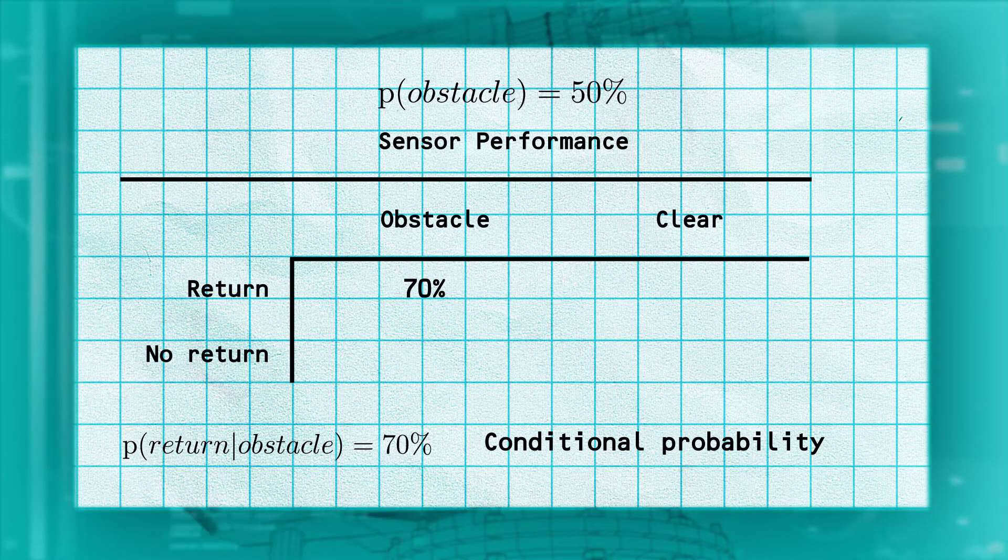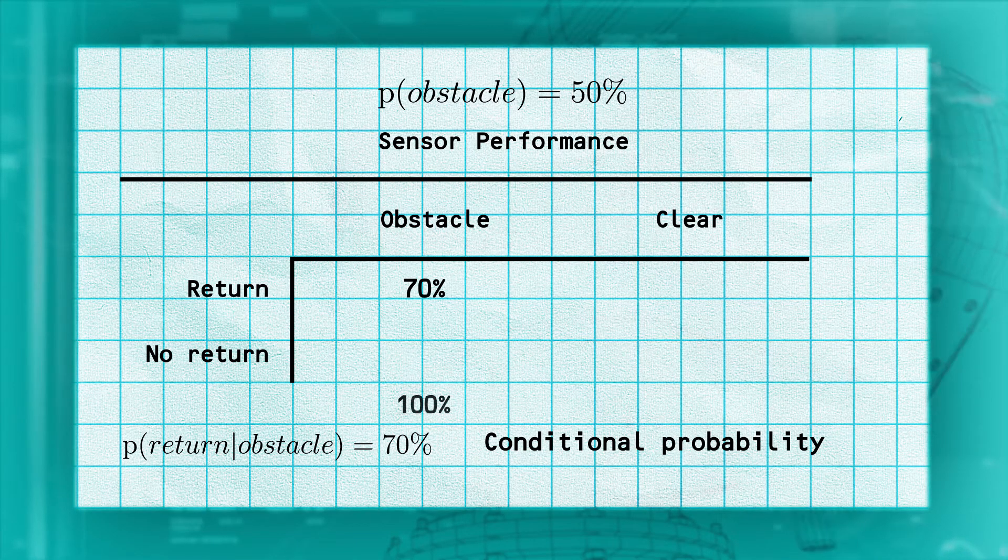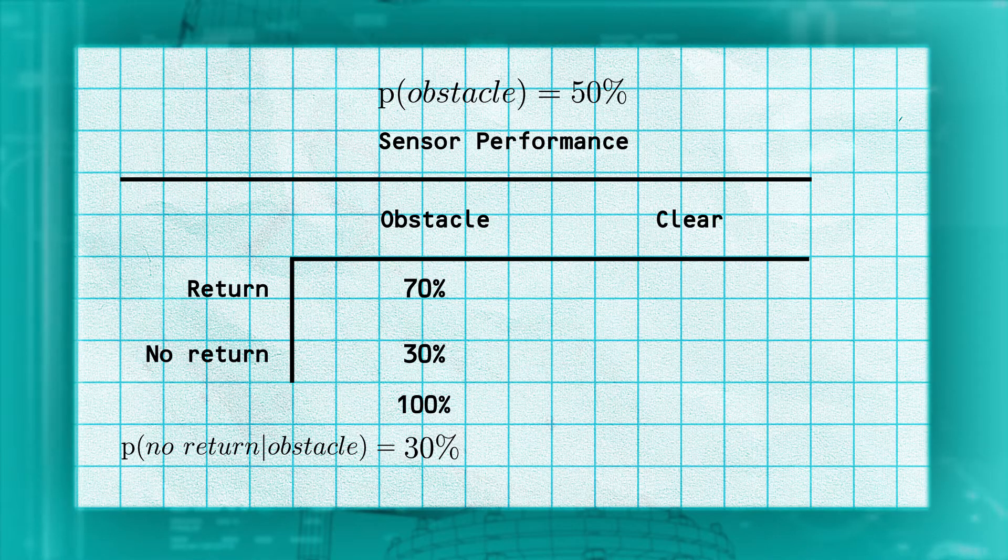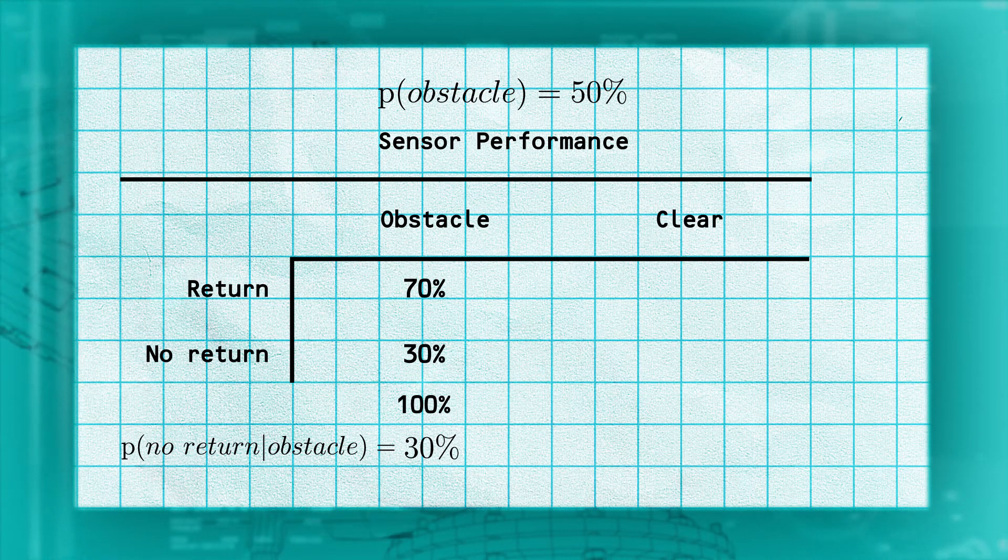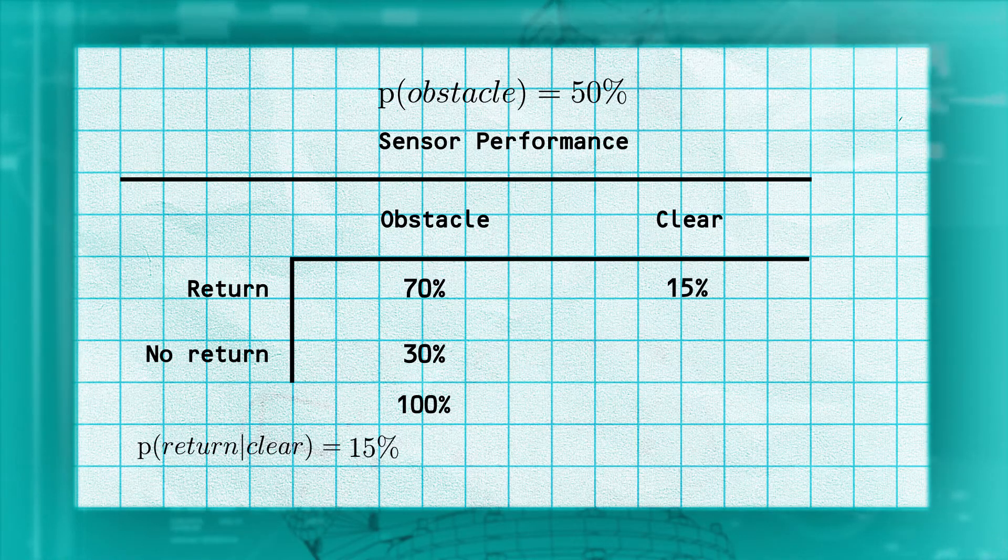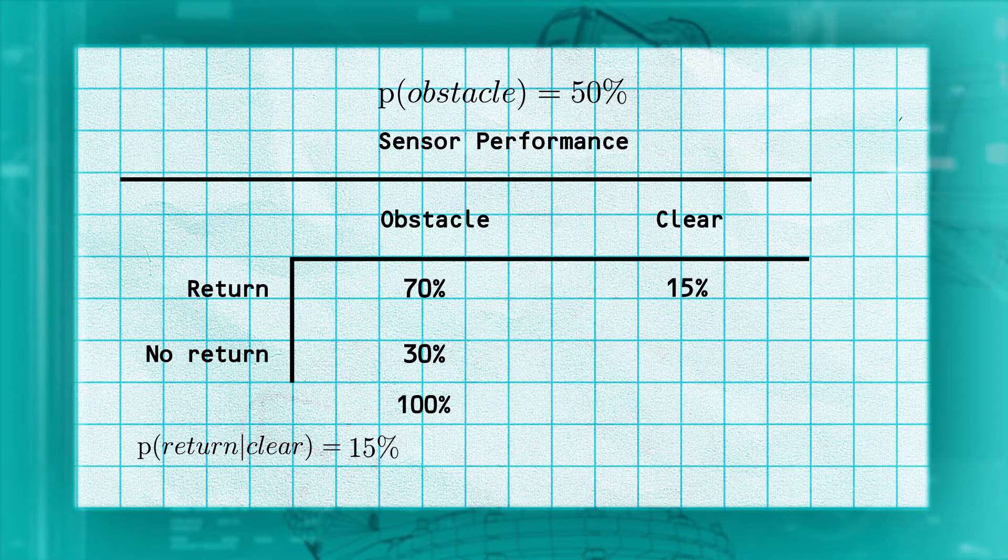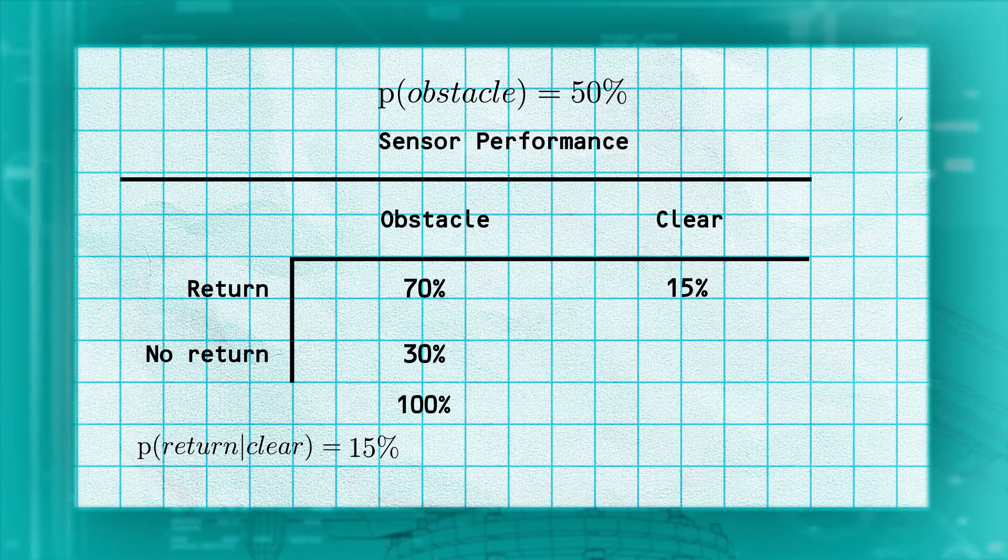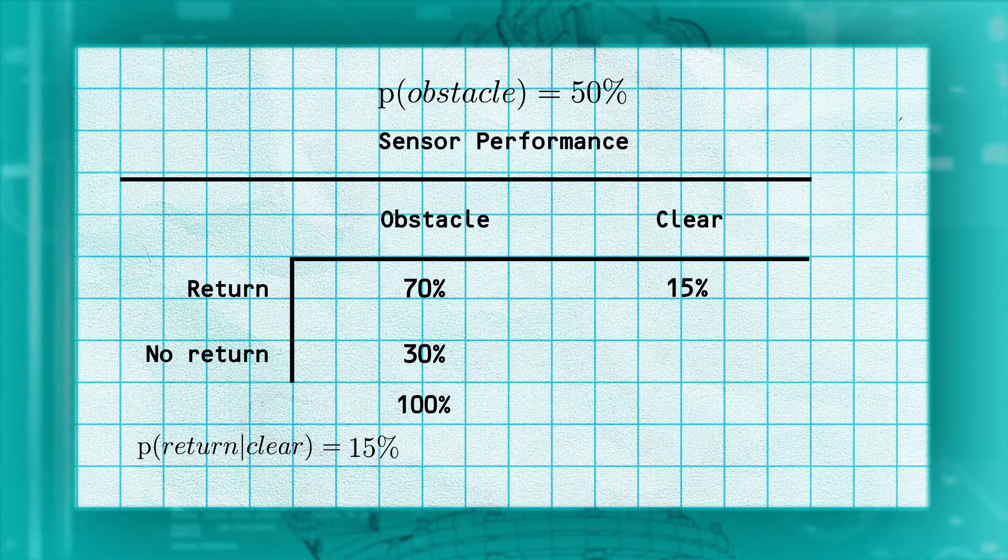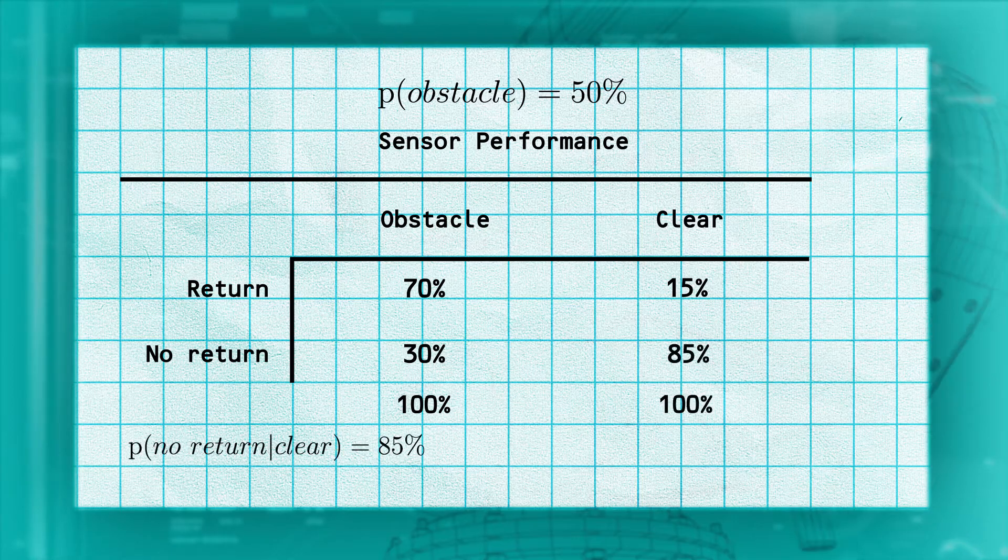Since we either get a return or don't, the probability that we don't get a return from an occupied cell must be 100 minus 70, or 30%. We can do the same analysis for a cell that doesn't have an obstacle. Suppose our LIDAR will produce a return when there isn't an obstacle 15% of the time. We can write that as the probability of a return given a clear cell is 15%. Just like the first case, we also know that the probability of not getting a return for the same cell must be 100 minus 15, or 85%.